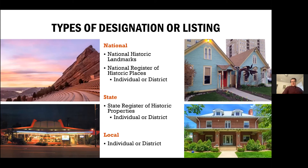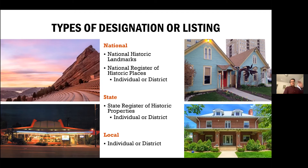Now we're going to talk about different types of designations, which really break down into three levels: national, state, and local. Denver Landmark Preservation is the local level, and our landmarks are designated by city council. At the national level, you have national historic landmarks, which are really the highest honor that can be provided to a historic site — they possess exceptional value or quality in illustrating and interpreting the heritage of the United States. Next is the National Register of Historic Places, buildings generally seen as being at a national level but not quite rising to the level of an NHL. For reference, there are about 2,600 national historic landmarks, two of which are in Denver, and about 95,000 properties on the National Register in the United States, about 300 of which are in Denver.